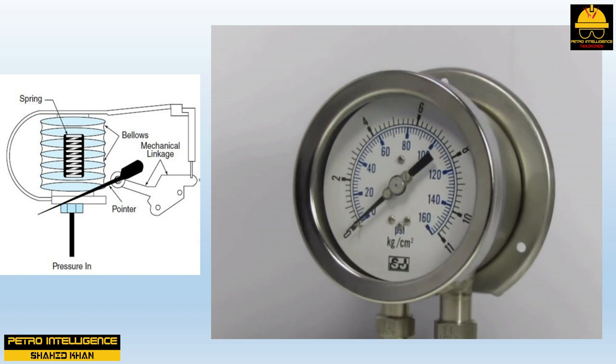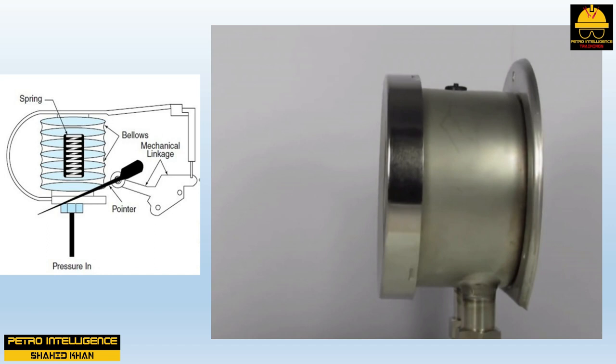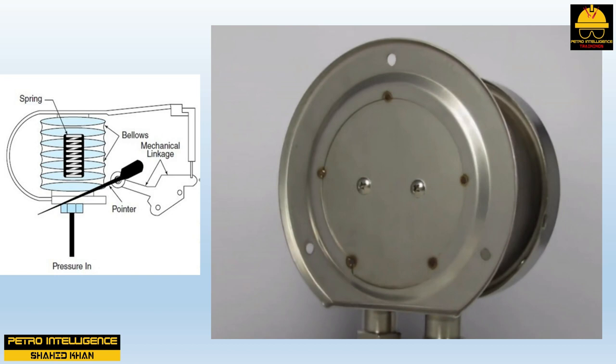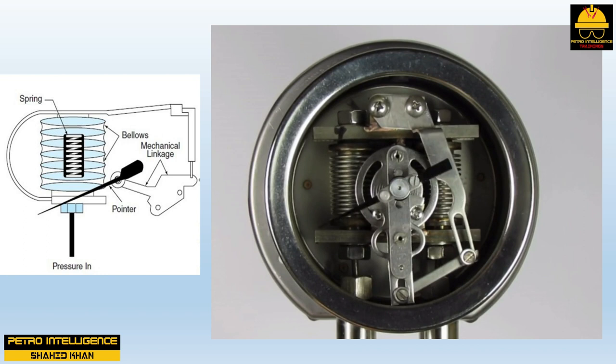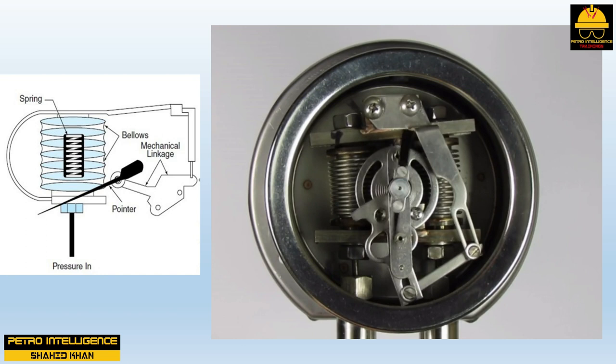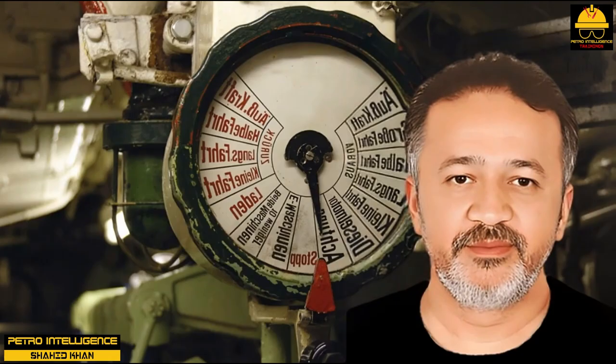A bellows pressure element consists of an accordion-type bellows, a spring that resists expansion, a pressure inlet, a mechanical linkage, and a pointer. During operation, pressure admits flow into the bellows; as the bellows expands, tension on the spring increases and the mechanical linkage moves the pointer. If pressure is reduced, the spring forces the bellows back to its original position.